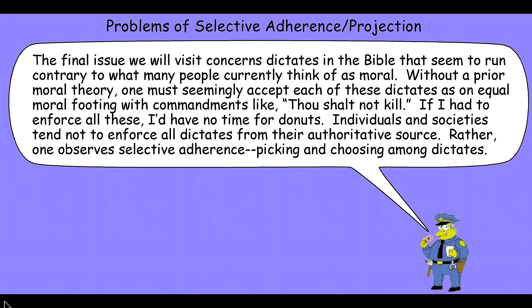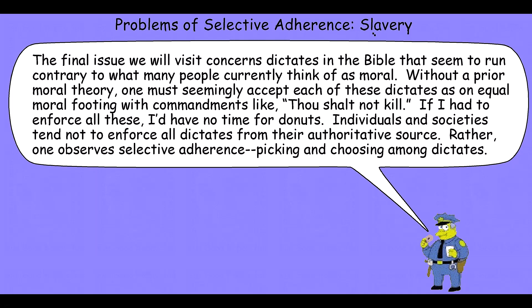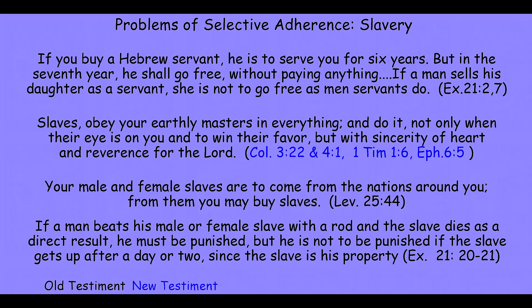In fact, if we enforced these, there would be a significantly larger number of death penalties and dramatic changes in the way that we conduct society. But individuals and societies just tend not to enforce all of the dictates from their authoritative moral sources. Rather, they tend to engage in selective adherence — picking and choosing among dictates. We'll finish this module by looking at one example: passages from both the Old and the New Testament that seem to endorse slavery and even prescribe behavior for slaves.